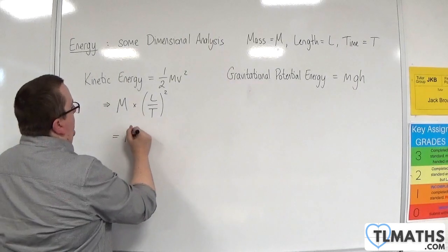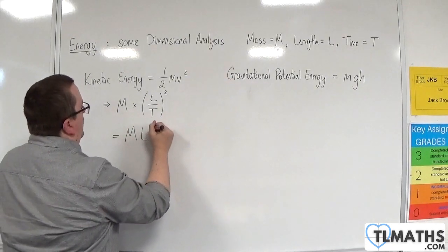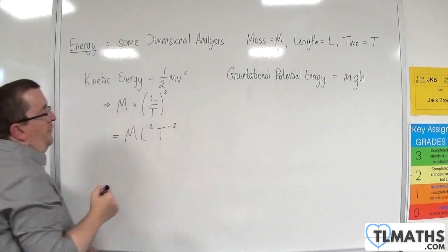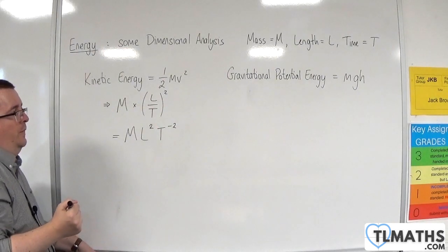So what we would end up with is mass, length squared, time to the minus two.